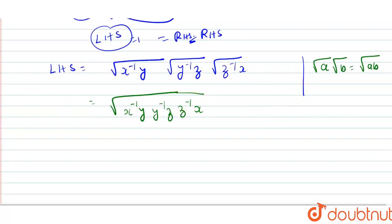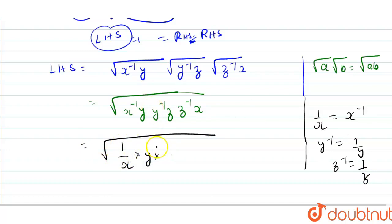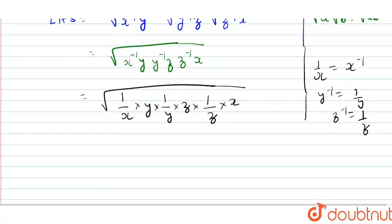Also, x raised to minus 1 is nothing else but 1 upon x. Similarly, y raised to minus 1 is 1 upon y, and z raised to minus 1 is 1 upon z. So substituting: in place of x raised to minus 1 write 1 upon x, y stays as y, y raised to minus 1 becomes 1 upon y, z stays as z, z raised to minus 1 becomes 1 upon z, and x stays as x. Then we rearrange the terms.